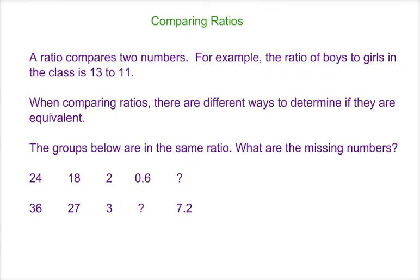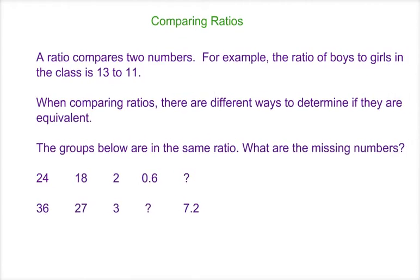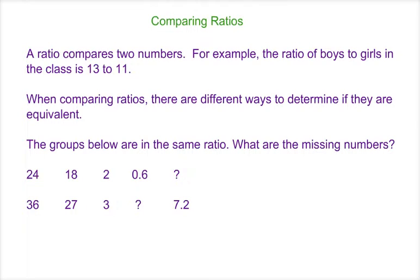Below, we have groups of numbers, and they are in the same ratio. We're going to find the two missing numbers here. Now, a couple things that we notice about these first three groups. The first thing we notice about these first three groups of numbers is that in lowest terms, all three of these are in the ratio 2 to 3.